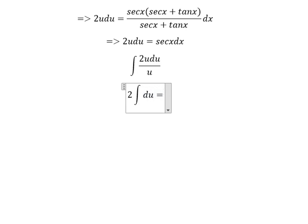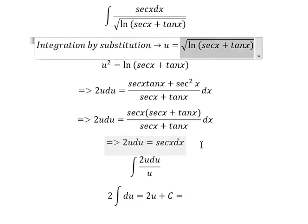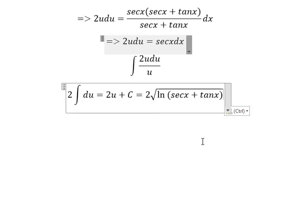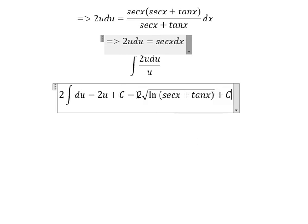And now we get 2u plus C. For u we need to change back to the square root, and this is the final answer. That's it, thank you for watching.